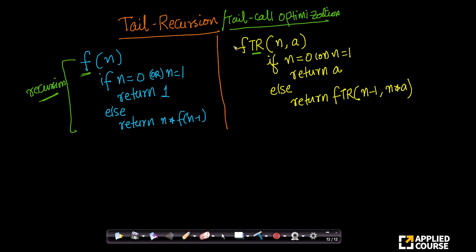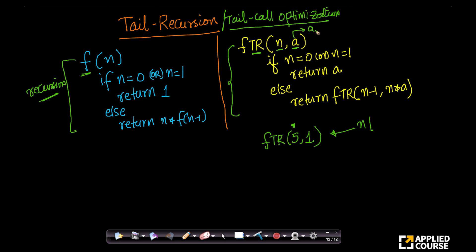First I will convince you that this function also computes factorial. If I want to compute factorial of 5, I will call ftr(5, 1). This function has two parameters: n and a. This 'a' is also called an accumulator. If I want to compute n factorial, I will call this function with n and a equal to 1.